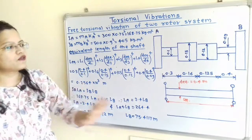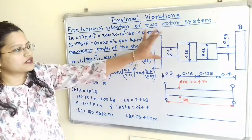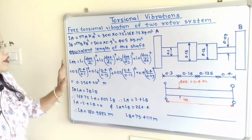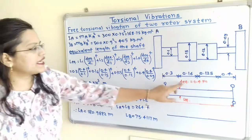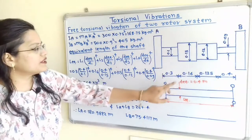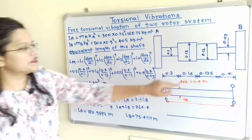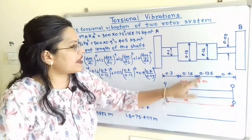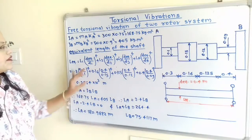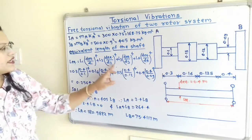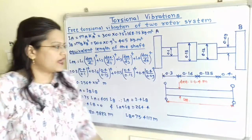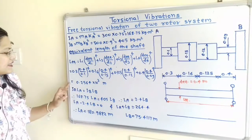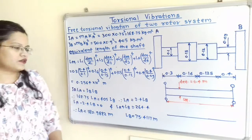To find L_equivalent, we take reference from the actual system. This is the actual system and this is the equivalent system. L_equivalent = L1 × (D_equivalent / D1)⁴ + L2 × (D_equivalent / D2)⁴ + L3 × (D_equivalent / D3)⁴ + L4 × (D_equivalent / D4)⁴. Since D_equivalent = 0.4 m and the values of D1, D2, D3, D4 and L1, L2, L3, L4 are all known, when we put in the values and calculate, we get L_equivalent = 0.2564 × 10³ m.